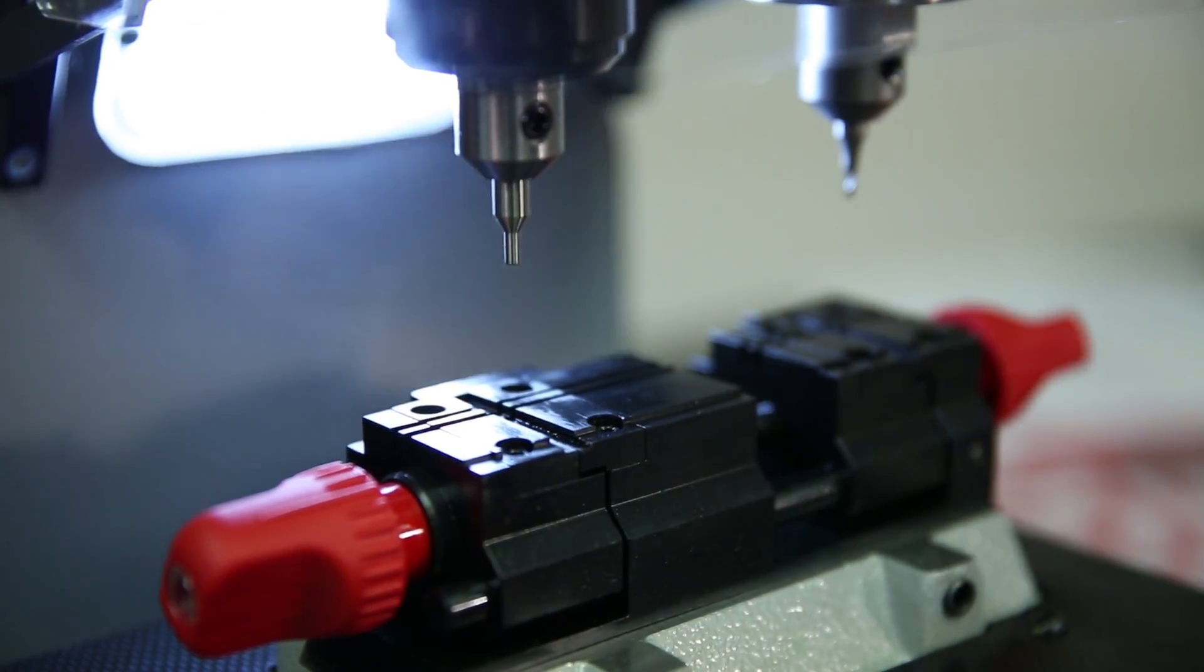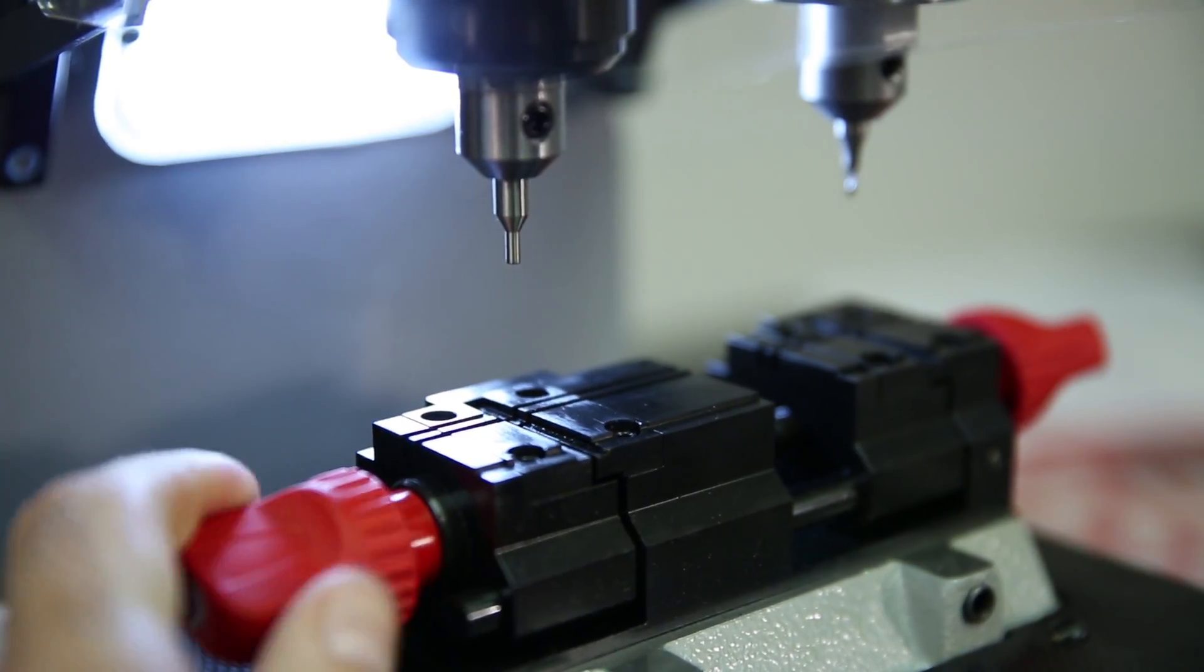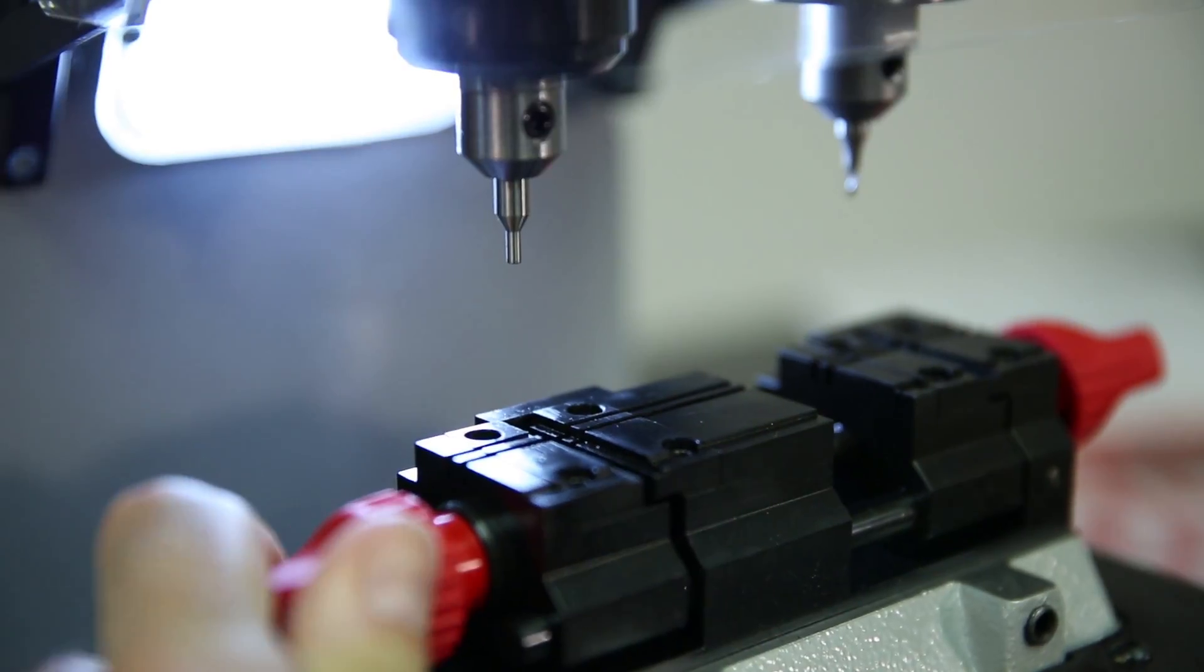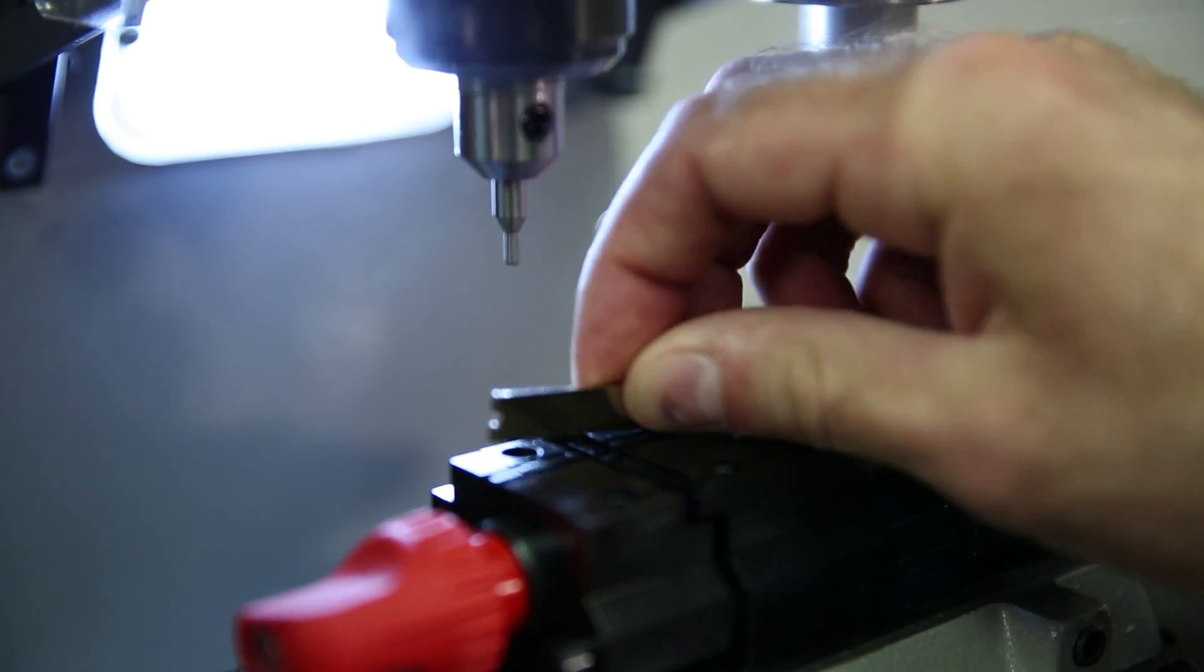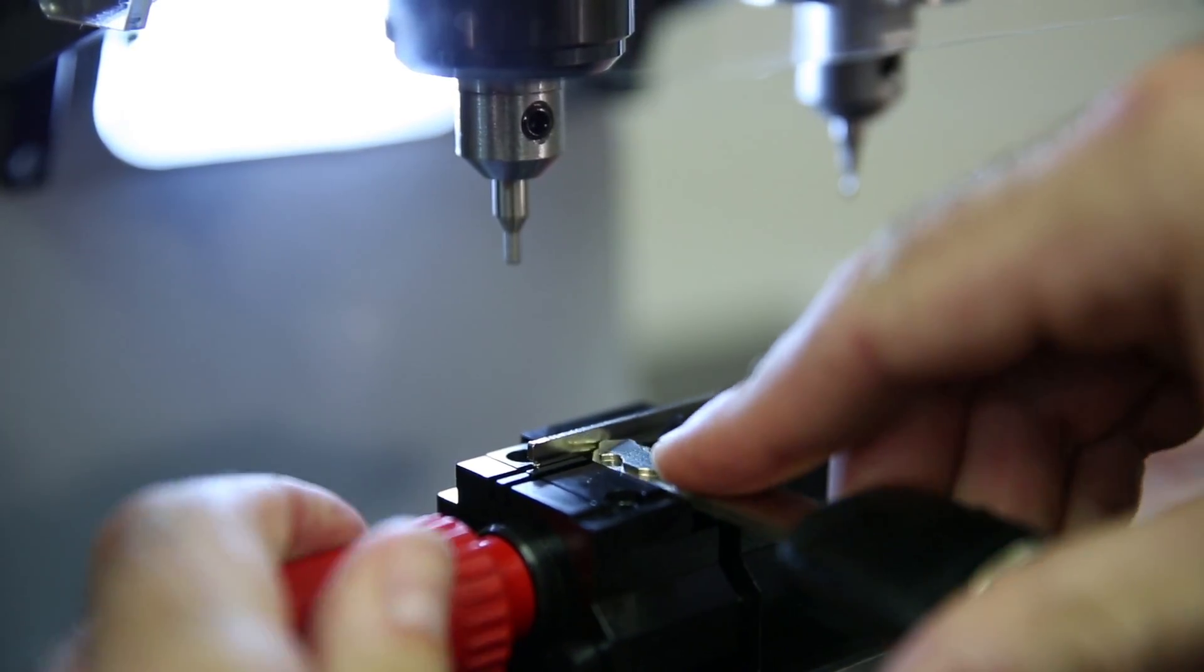The machine is now calibrated and the keys can be loaded and the depth of cut set. Start by inserting the original key into the left jaw. Remember to make sure that the key is properly gauged and is sitting flat in the jaws.